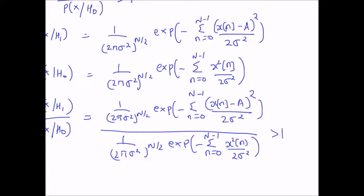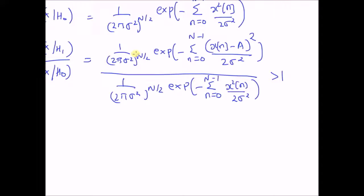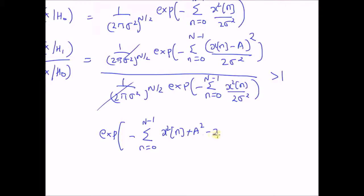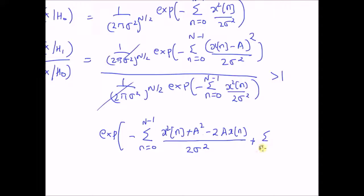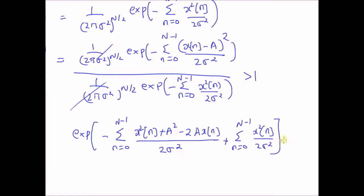This ratio should be greater than 1. Upon simplification, we can cancel the normalizing constants and rewrite the exponential as: minus the sum from n=0 to N−1 of [x²(n) + A² − 2A·x(n)] over 2σ², and this exponential should be greater than 1.